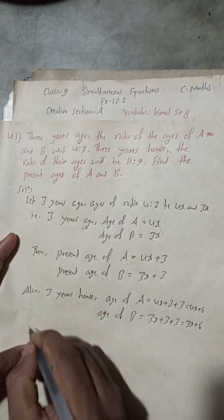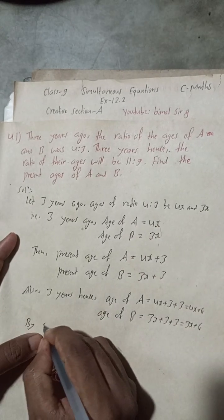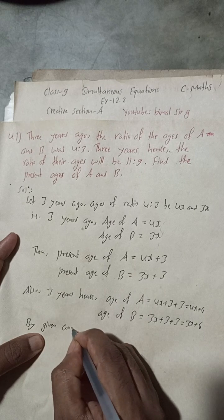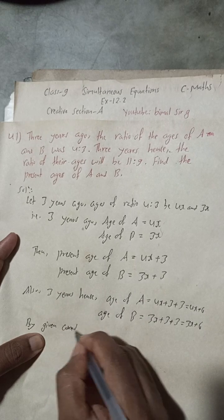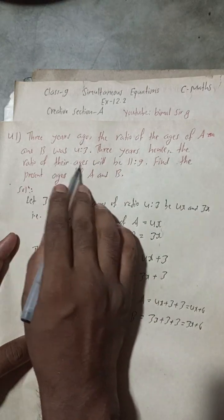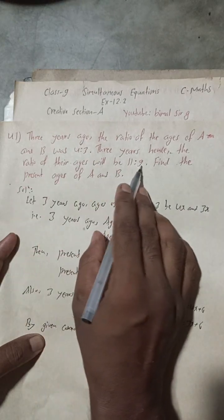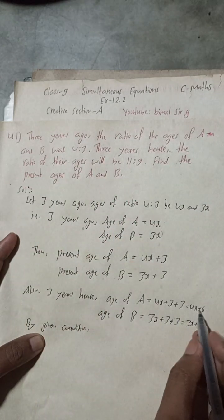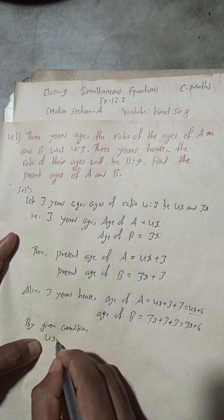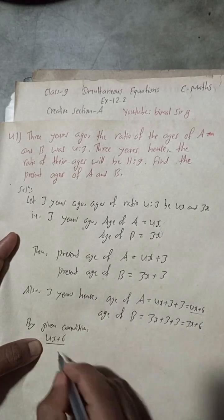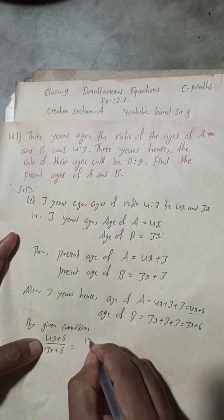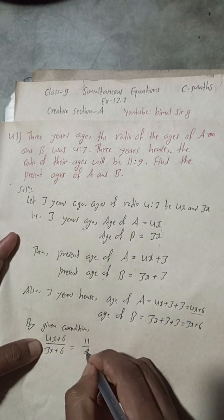By the given condition, three years hence the ratio of their ages will be 11 is to 9. So the ratio of (4X + 6) to (3X + 6) equals 11 by 9.